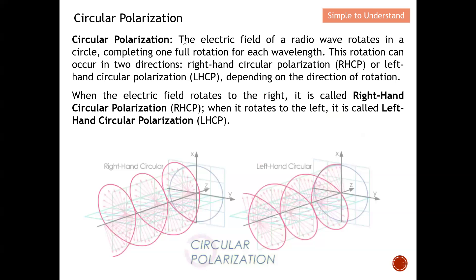Now let's continue on circular polarisation — this is slightly more challenging, so follow closely. In circular polarisation, the E-field of a radio wave actually rotates in a circle. The magnitude remains the same as the field changes in a circle. They complete one full rotation for each wavelength — once they finish one rotation, they are done with one wavelength. This rotation can occur in two directions: right-hand circular polarisation, which is clockwise, and left-hand circular polarisation.